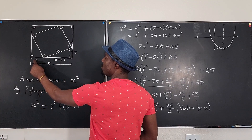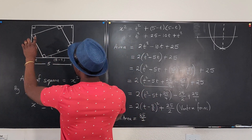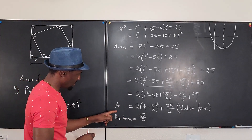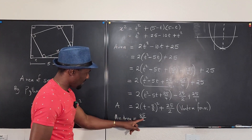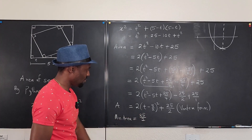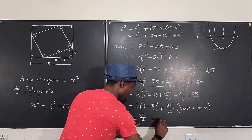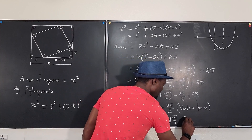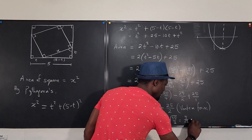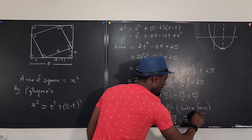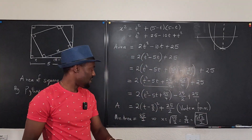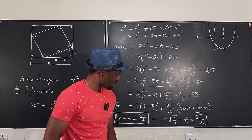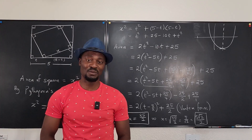When t equals 5/2, which is 2.5, we have the minimum area of 25/2. Since area equals x squared, x equals the square root of 25/2, which is 5 over the square root of 2, or 5√2 over 2. That's the side length of the smallest inscribed square. Never stop learning — those who stop learning have stopped living. Bye bye!